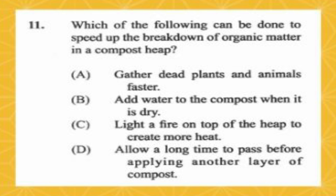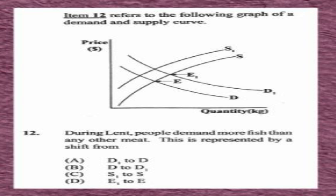Question number eleven: which of the following can be done to speed up the breakdown of organic matter in a compost? A) gather dead plants and animals faster, B) add water to the compost when it is dry, C) light a fire on top to create more heat, D) allow a long time to pass before applying another layer. The answer is B, add water to the compost when it is dry.